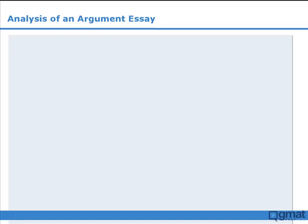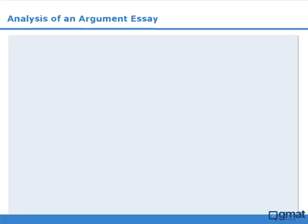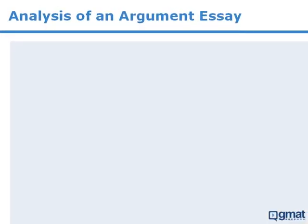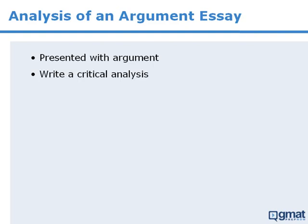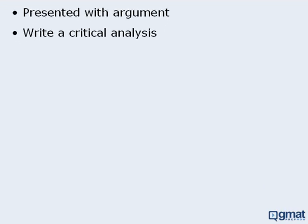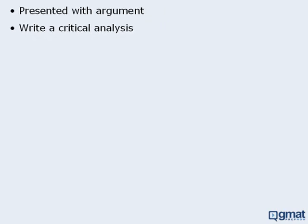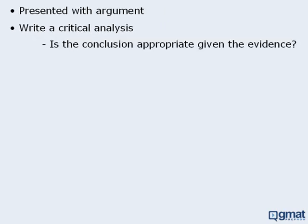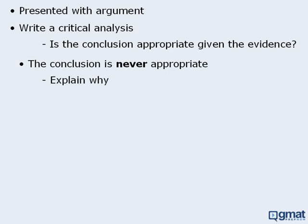In this lesson, we'll take an introductory look at the analysis of an argument essay. For this task, you are presented with an argument and you must write a critical analysis of that argument. Specifically, you must critique how well the author's conclusion follows from the evidence. In other words, is the conclusion appropriate given the evidence? Since the arguments for this task are typically weak, the conclusion is never appropriate. Your job is to explain why it's not appropriate.